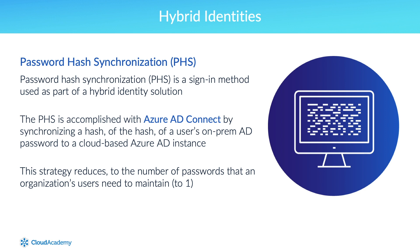Password hash synchronization, which is the most common hybrid identity solution, requires an organization to install Azure AD Connect. Once Azure AD Connect is installed, directory synchronization between the on-prem Active Directory instance and the Azure Active Directory instance is configured. As part of the synchronization configuration, password hash synchronization is enabled.